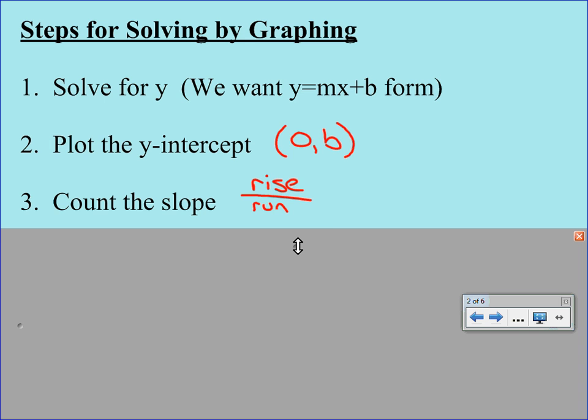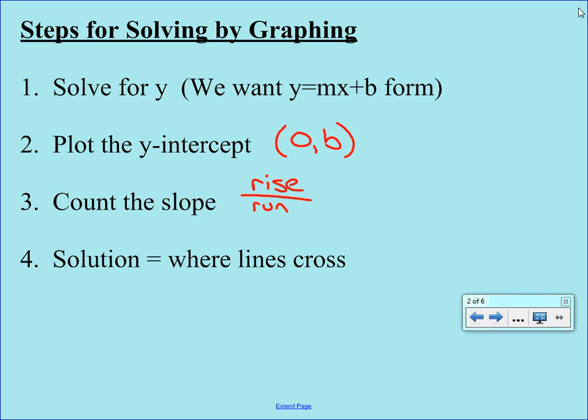After you've plotted both of your lines, your solution is going to be where those two lines cross. And remember that a solution has to look like an ordered pair. It has to be an x and a y coordinate. So basically you're going to do steps one, two, and three twice because you have two lines. And then once you get those two lines on the graph, you'll look for the solution where those two lines cross.